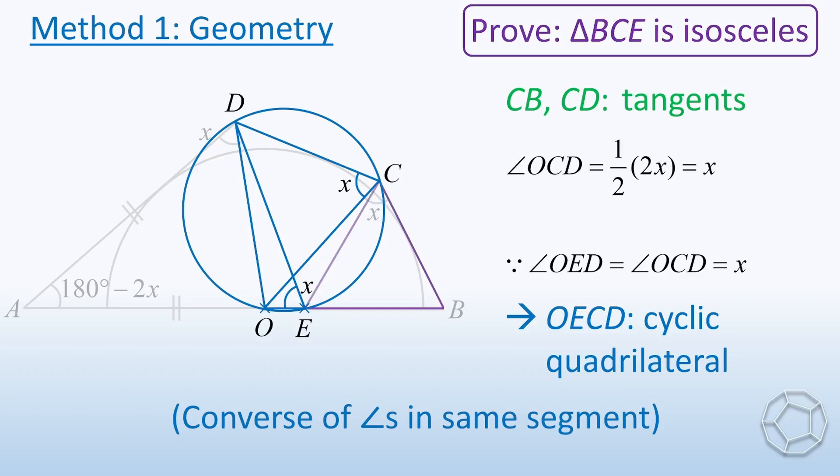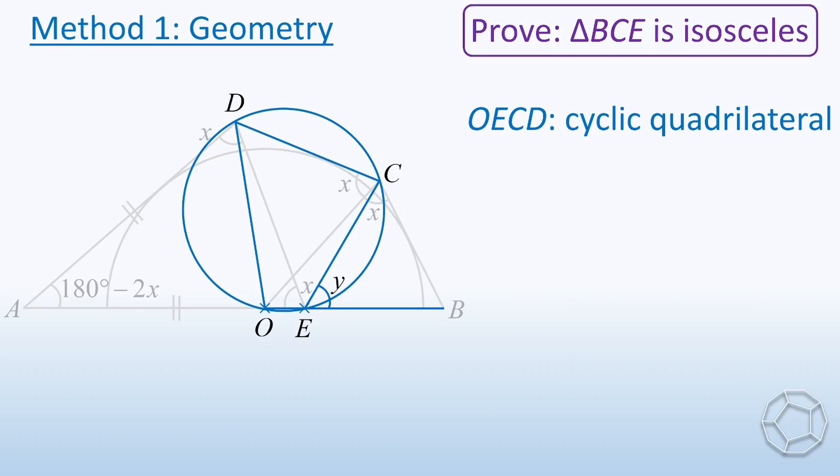Now, we go back to our original goal: prove that the purple triangle is isosceles. So we need this purple angle. Let's call it Y. Actually, it is an exterior angle of the cyclic quadrilateral. So angle D also equals Y.